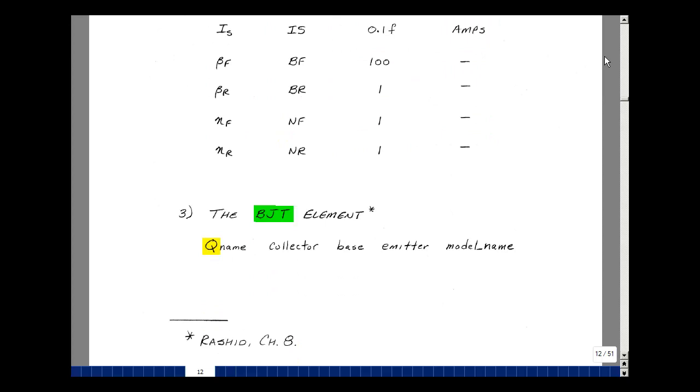Resistors began with the letter R, inductors with the letter L, capacitors with the letter C, voltage sources with the letter V, current sources with the letter I, diodes with the letter D, but in BJT, the letter is Q.